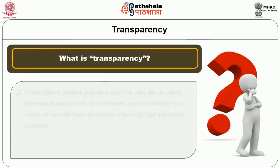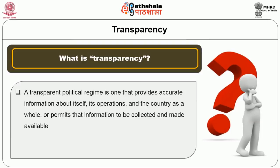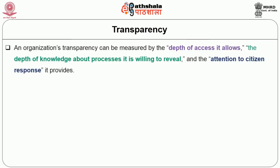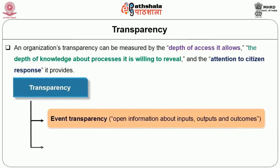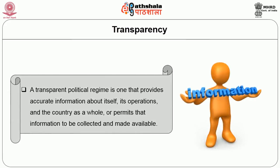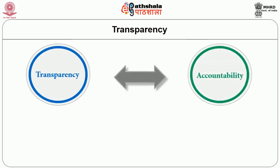A transparent political regime is one that provides accurate information about itself, its operations and the country as a whole, or permits that information to be collected and made available. Transparency is a tool to facilitate the evaluation of public institutions, and the information provided accounts for their performance. An organization's transparency can be measured by the depth of access it allows, the depth of knowledge about processes it is willing to reveal, and the attention to citizen response it provides. Transparency covers event transparency, process transparency, real-time transparency and retrospective transparency. Transparency and accountability are reciprocally supporting.